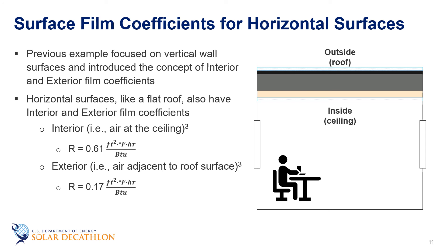However, unconditioned attics become fairly complicated because they are often impacted by solar gain and the amount of outside ventilation moving through that attic space. That complexity means that simple one-dimensional solutions are difficult to do. Our target here is to help you understand some of the physics and how it applies to building design. We're going to see that for well-insulated buildings, the ceiling and roof have a minimal amount of heat transfer compared to the walls. For the time being, we will consider ceilings and attics with the one-dimensional model, remembering that these are all models to approximate real-world physics of heat transfer.